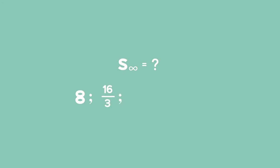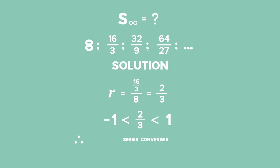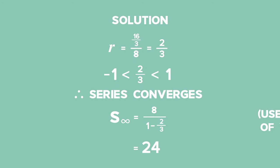Find the sum to infinity for the sequence: 8, 16 thirds, 32 ninths, 64 twenty-sevenths, and so on. Solution. We must start by determining the value of r. r is equal to 16 thirds divided by 8, which equals 2 thirds. Since 2 thirds lies between negative 1 and 1, the series converges. The sum to infinity is equal to a divided by 1 minus r, which equals 8 divided by 1 minus 2 thirds, giving us 24.